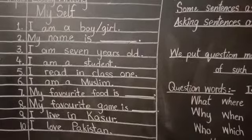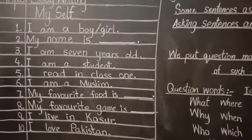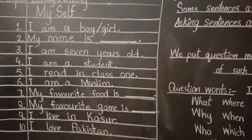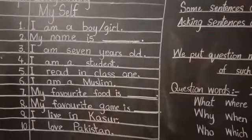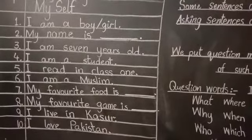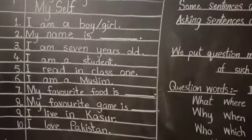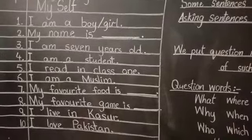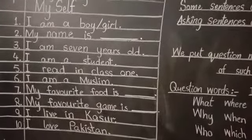First sentence: 'I am a boy.' If you are a boy, write 'I am a boy'; if you are a girl, write 'I am a girl.' Second sentence: 'My name is ___.' You have to write your own name here — 'My name is [your name].'